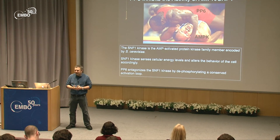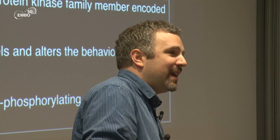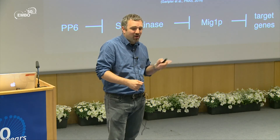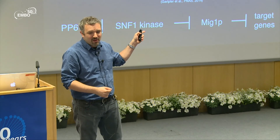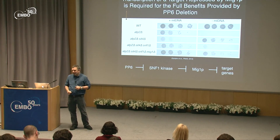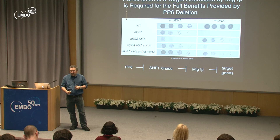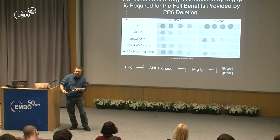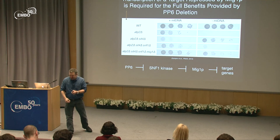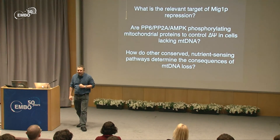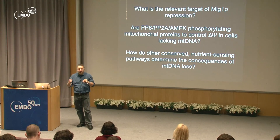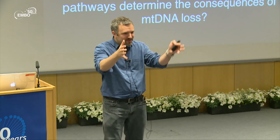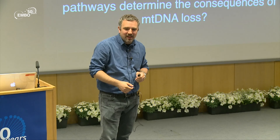Looking downstream of protein phosphatase 6, we identified a conserved kinase called AMPK. The beneficial effects of PP6 deletion depend partly on SNF1, the yeast AMPK ortholog. Downstream, deleting a repressive factor called MIG1 can bypass the lack of SNF1. Our open question is: what is the relevant target of MIG1 repression?